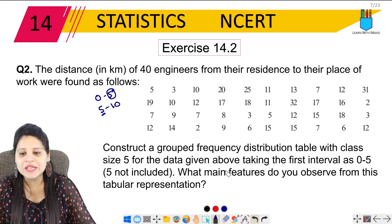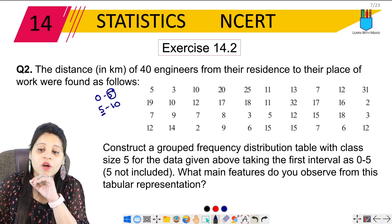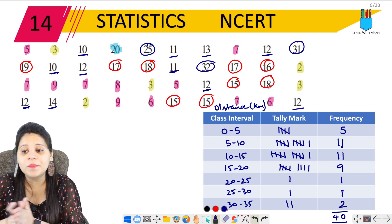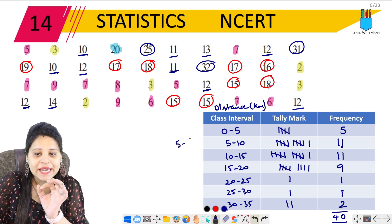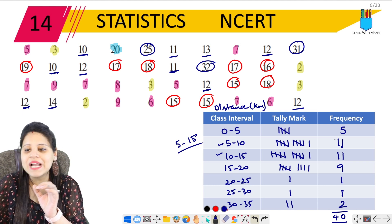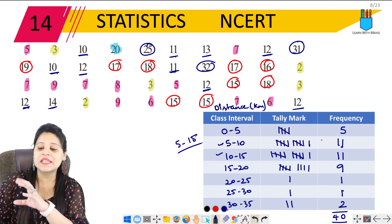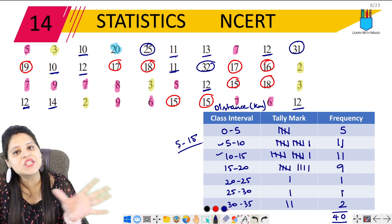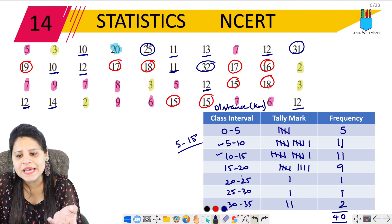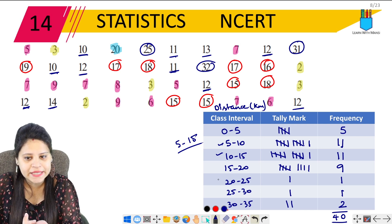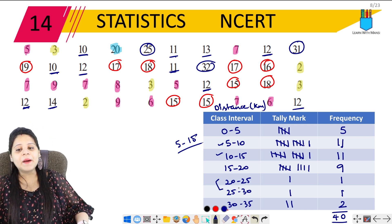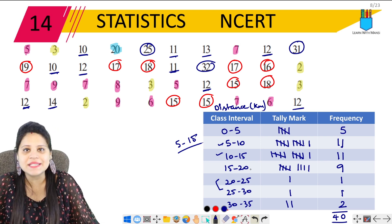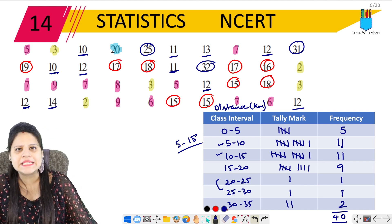Regarding the last part of the question — what main features do you observe from this tabular representation? First, we can see that from 5 to 15 km, these two class intervals have the most employees, with 11 each. We can also say that between 20–25 and 25–30, they are both equal. Or, we can say that most engineers travel less than 20 km to work.